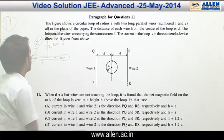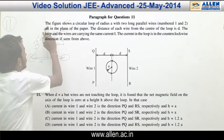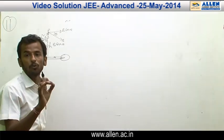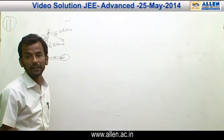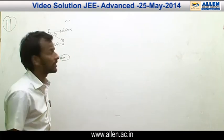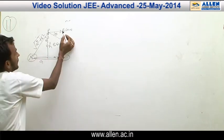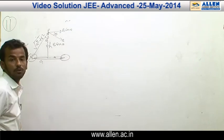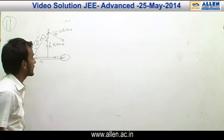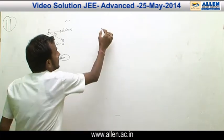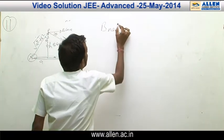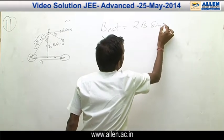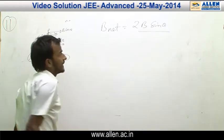In question number 11, the magnetic field on the axis of the ring is 0. Therefore, the magnetic field due to the wire and the magnetic field due to the ring will be equal and opposite. The magnetic field due to the wire is B cos θ in the horizontal direction and B sin θ in the vertical direction. The net magnetic field in the vertical direction will be 2B sin θ.